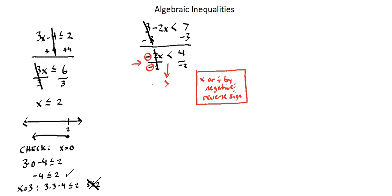The negative 2s offset. We're left with x greater than — 4 divided by negative 2 is negative 2. Now let's show this solution on a number line. We'll mark negative 2 on the number line. The solution is greater than, not greater than or equal to, but greater than — we'll represent that with an open circle. And now we have on the number line x is greater than negative 2. Everything larger than, and excluding, negative 2 is a solution to this inequality.